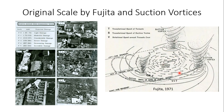Here is an example from Fujita's 1971 research showing those suction vortices. We have one major tornado at the center of the system, and then these other suction vortices that rotate around it in a counterclockwise manner around the main tornado center. These can be responsible for producing some of the most extreme damage to structures.